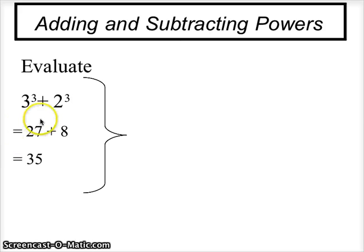Remember, there are no laws for adding and subtracting powers. So in this situation, 3 to the power of 3 is 3 times 3 times 3, which is 27, and 2 to the power of 3 is 2 times 2 times 2, which is 8. We will now add these together to get 35.